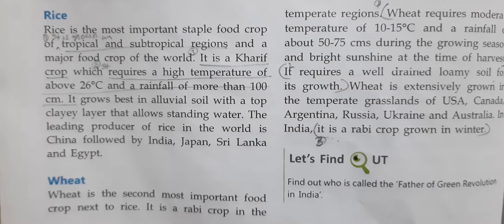Cotton requires high temperature and low rainfall. It needs 210 frost-free days aur bahut chamakdar sunshine jo hai growth ke liye iske chahiye. Cotton textile industries ke liye raw material provide karta hai.